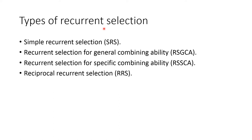Types of recurrent selection. First is simple recurrent selection, also called SRS. Next is recurrent selection for general combining ability, represented as RSGCA. Third is recurrent selection for specific combining ability, represented as RSSCA. Then reciprocal recurrent selection, represented as RRS.